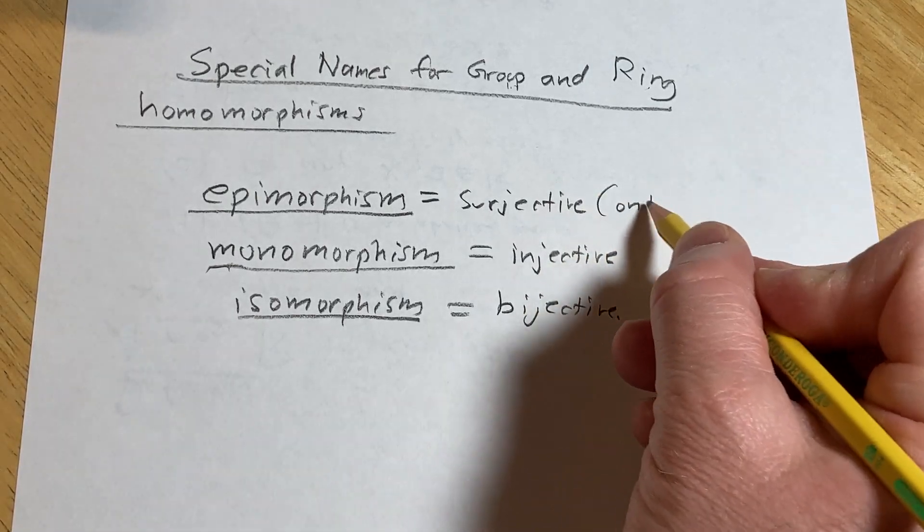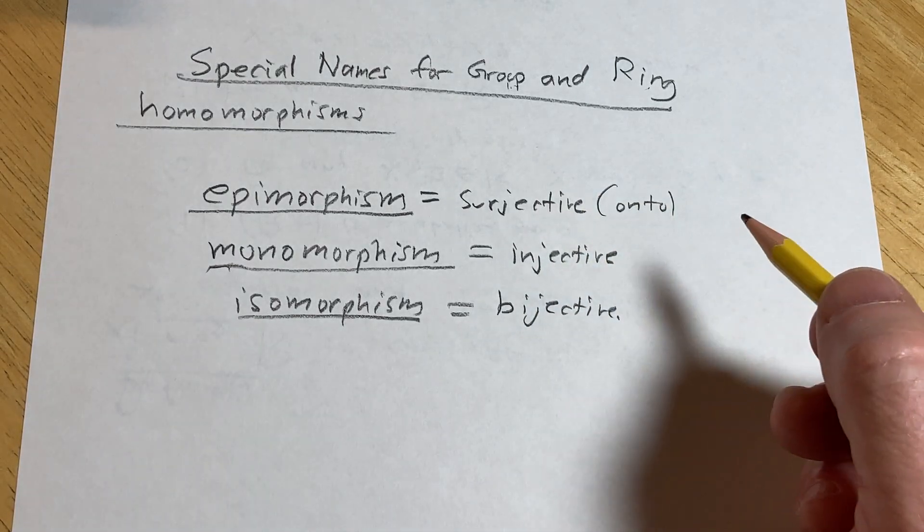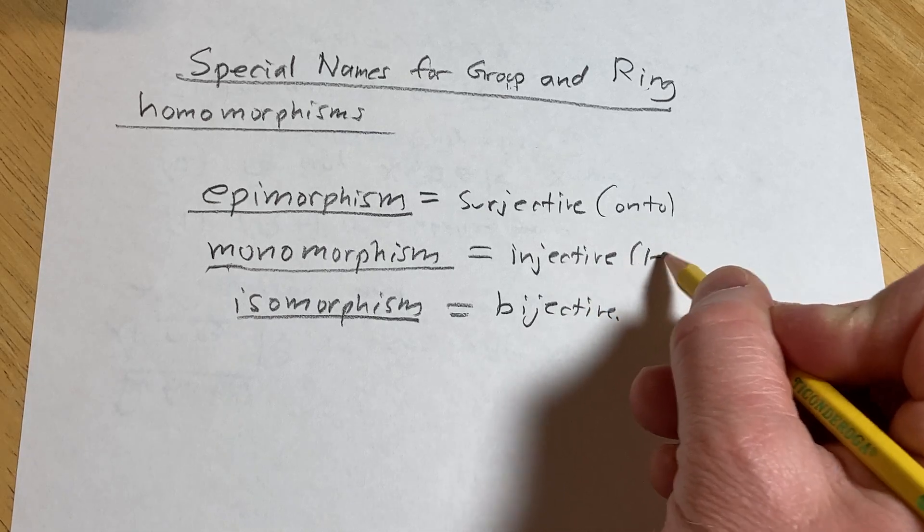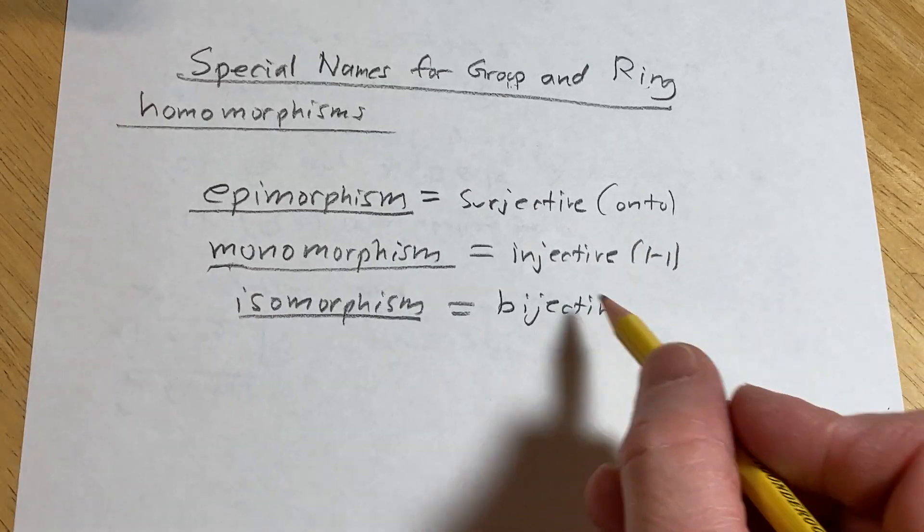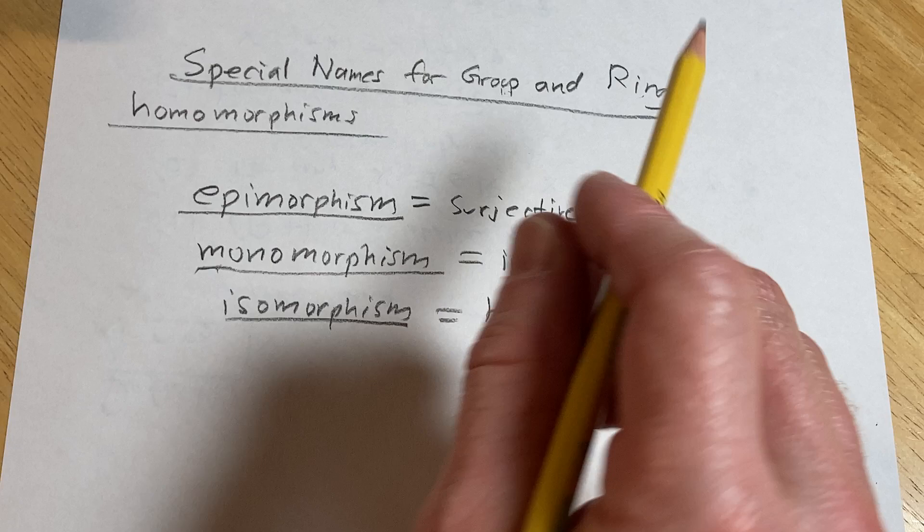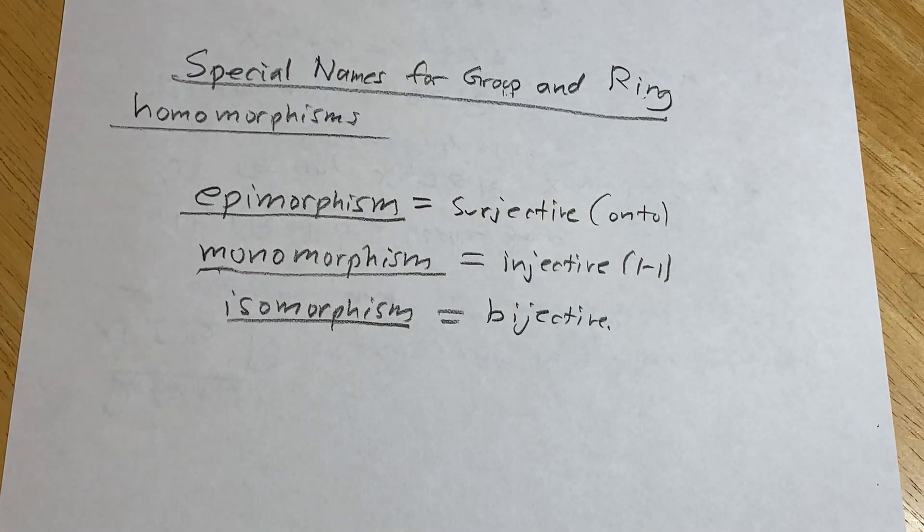So likewise, you can say this is an onto group or ring homomorphism. You can say this is a one-to-one group or ring homomorphism. And you can say this is a one-to-one correspondence. So I just thought I would make this video to show you this stuff. Take care.